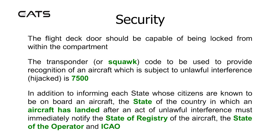The flight deck door should be capable of being locked from within the compartment. The transponder or squawk code to be used to provide recognition of an aircraft which is subject to unlawful interference is 7500.